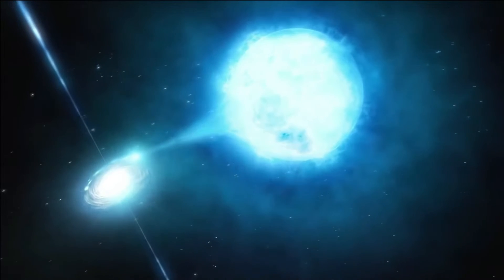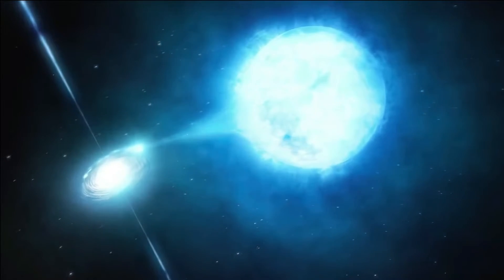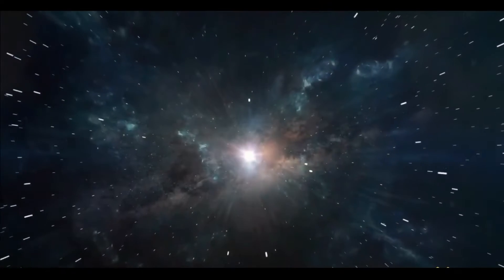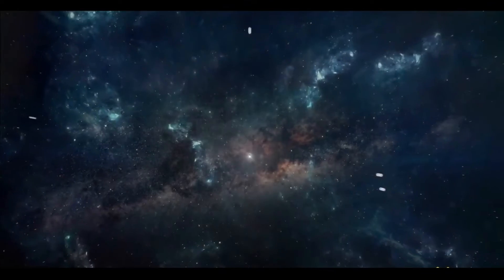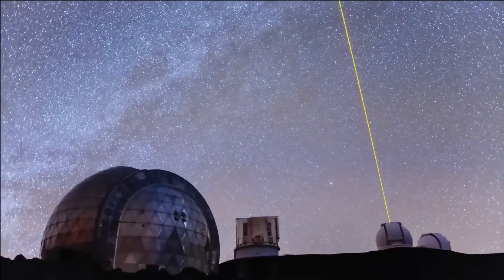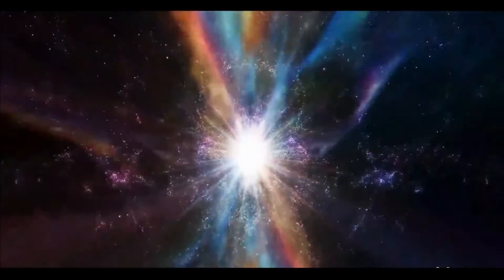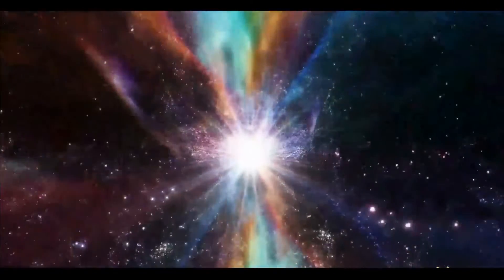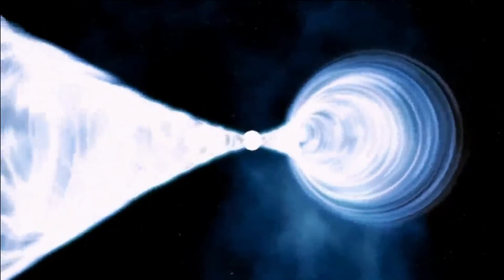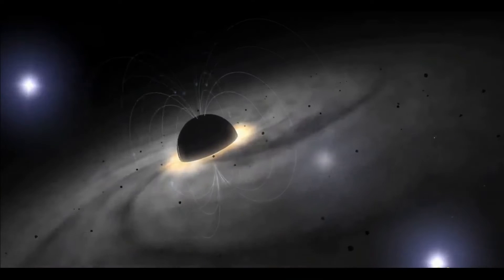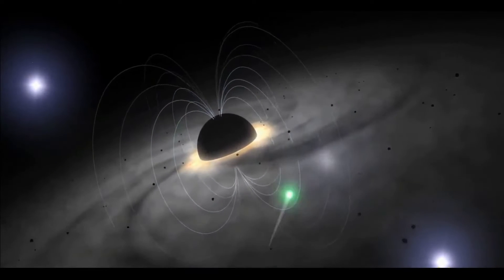A black hole cannot be seen because its strong gravity doesn't allow even light to escape. However, scientists can observe the effects of its powerful gravity on the stars and gases around it. If a star is orbiting a certain point in space, scientists can examine the star's motion to determine if it's orbiting a black hole. When a black hole and a star are orbiting close together, high-energy light is produced.